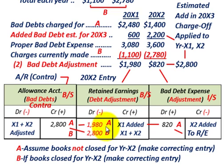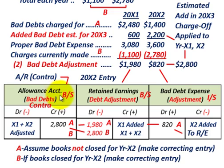To summarize: we had to set up an allowance even though the bad debt wasn't projected until year 20x3, because we knew it was coming and approximately how much would go against 20x1 and 20x2 sales. So we had to adjust our accounting records based on our knowledge of what we're projecting in the future.